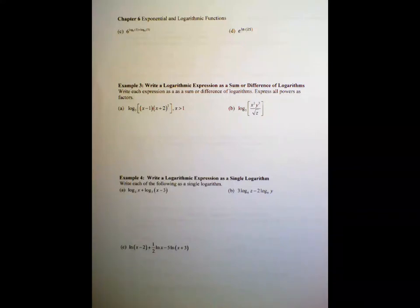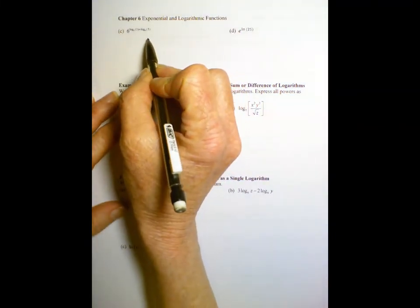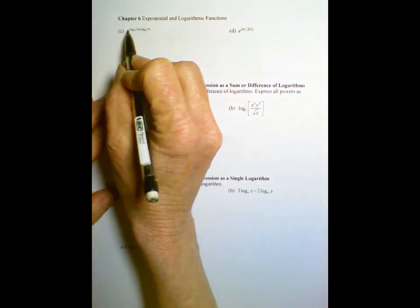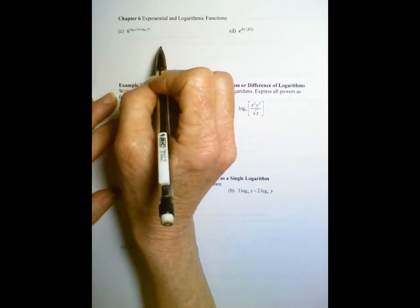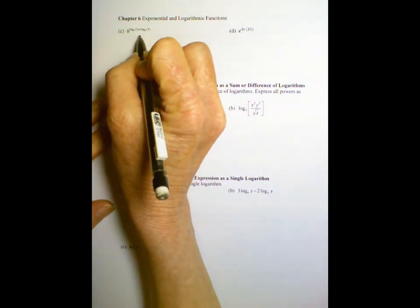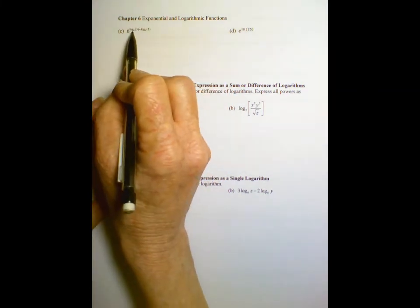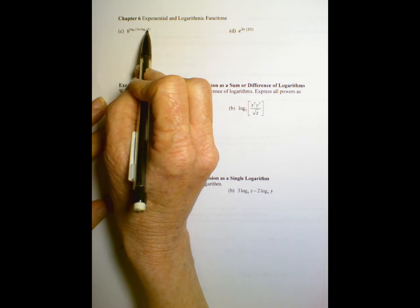We're continuing Example 2 from Section 6.4 on logarithmic functions, Part C. We're using the properties of logs that we've learned so far to simplify or evaluate our expression without a calculator. So here we have 6 raised to the power of log base 6 of 3 plus log base 6 of 5.